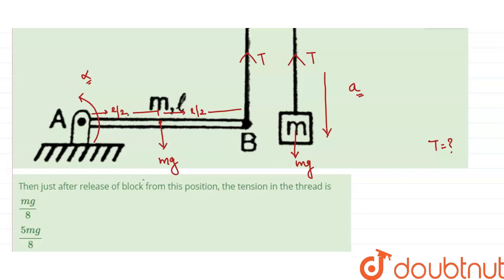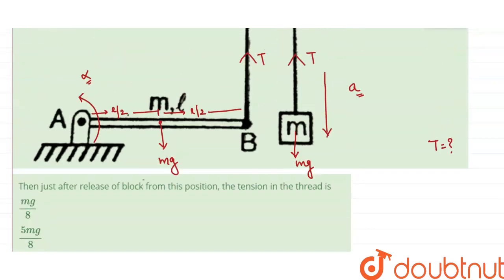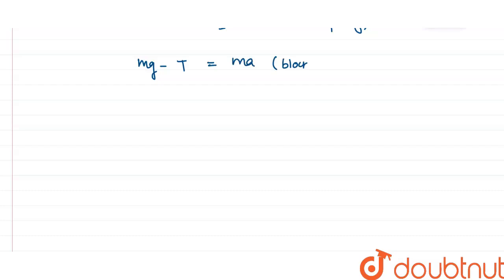For an ideal string, the constraint condition gives: a = αL, where α is the angular acceleration and L is the length of the rod. Now writing the equation for the block using Newton's second law: MG − T = MA, which gives us A = G − T/M. This is equation 1.